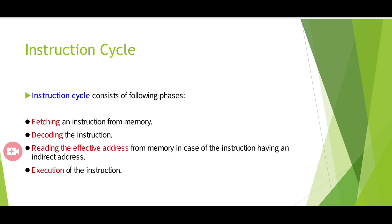An instruction is a command given to the system for performing a task. An instruction cycle consists of the following phases: first, fetch the instruction from memory; second, decode the instruction; third, read the effective address from memory in case the instruction has an indirect address; and fourth, execute the instruction.